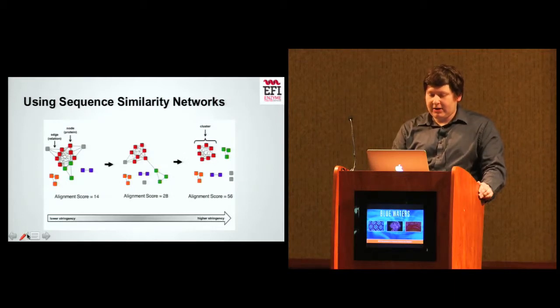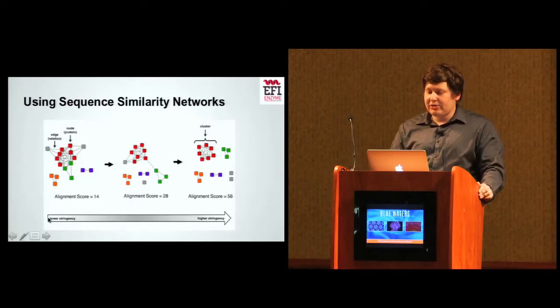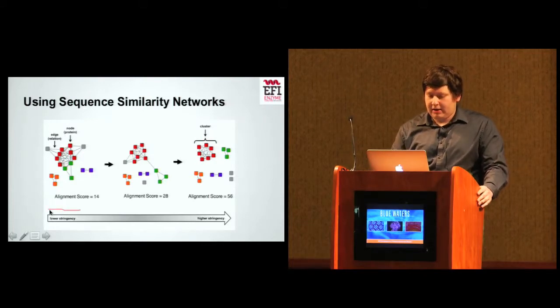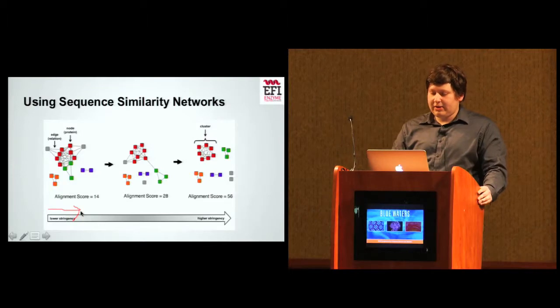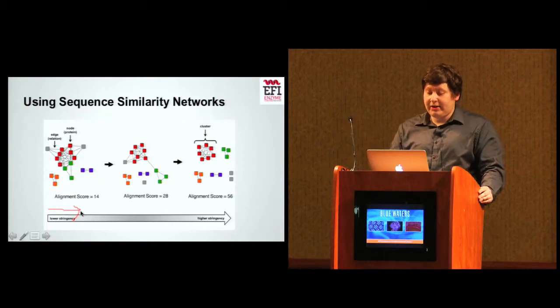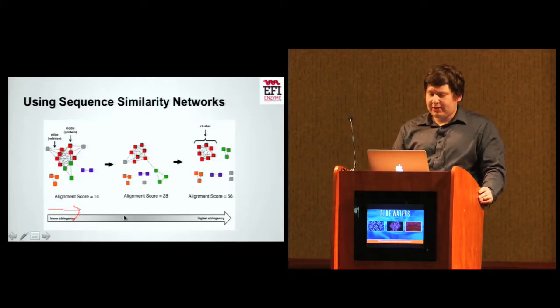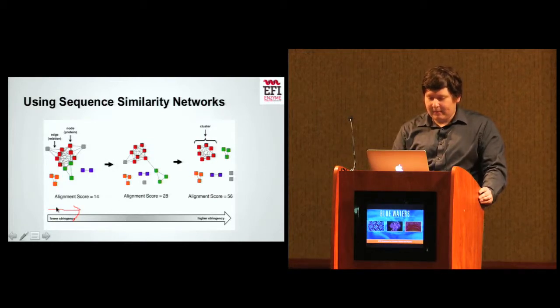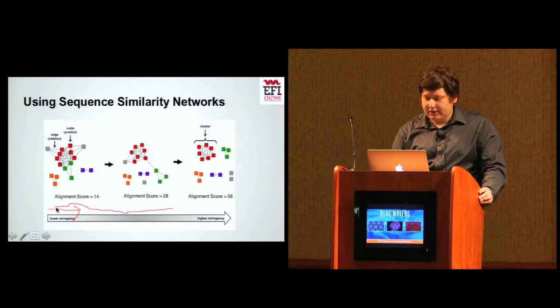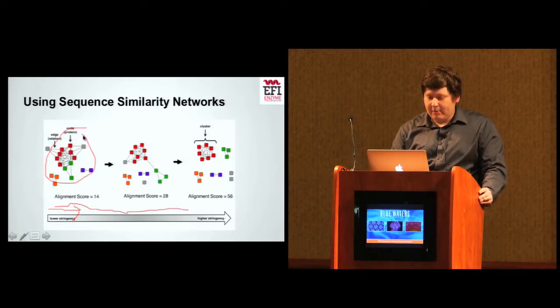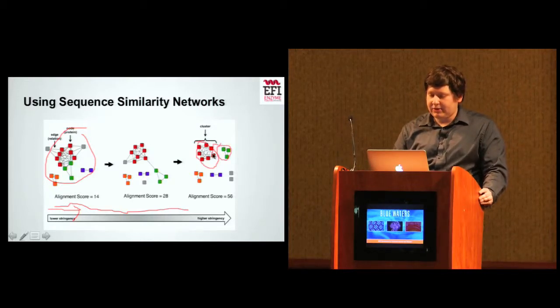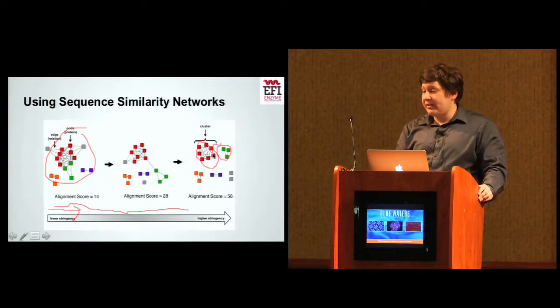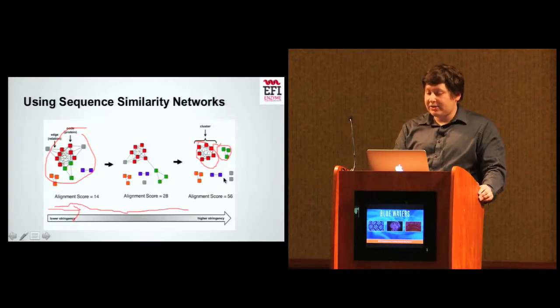When you use a sequence similarity network, you can choose the stringency of the network by choosing a higher alignment score percent identity cutoff. As you increase the stringency, you can help determine if proteins are isofunctional, or whether they could perform the same chemistry. Clusters that don't meet the threshold are dropped. As the stringency is increased, we get to cluster from a hairball into something that's more discrete. These clusters contain highly related sequences, and you can experimentally validate the function of these sequences, and then transfer that information to the other proteins in that cluster.